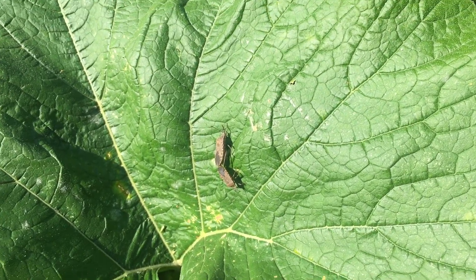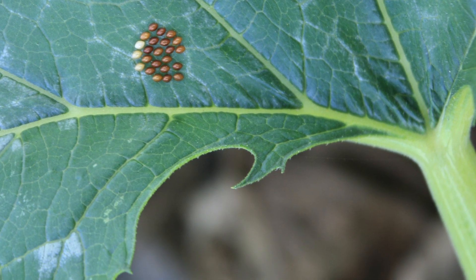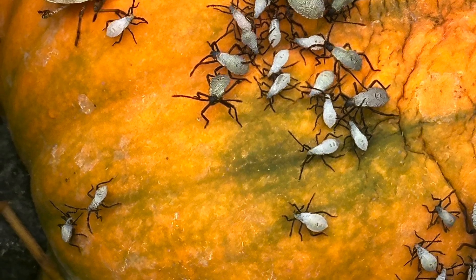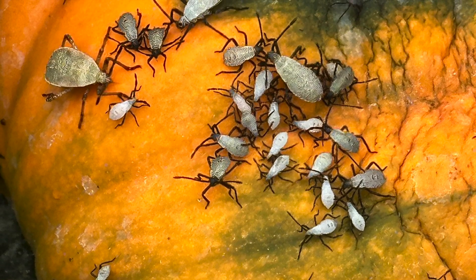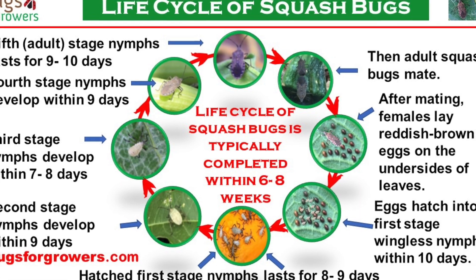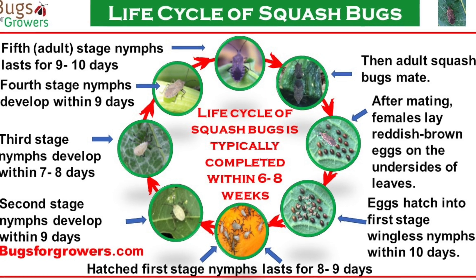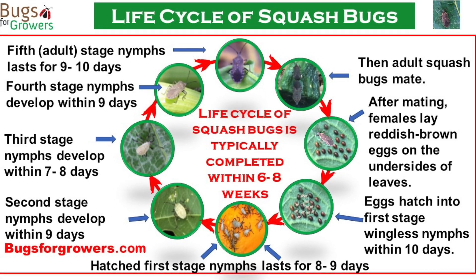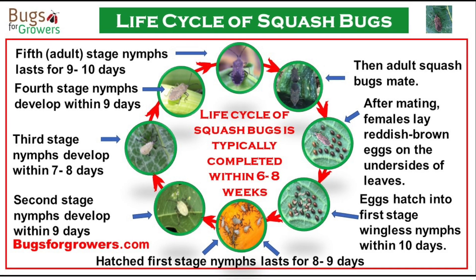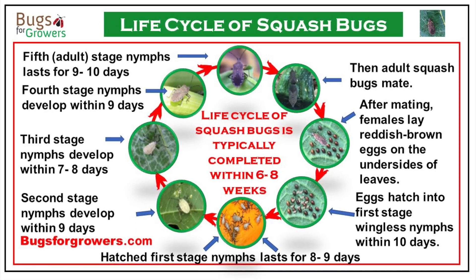After mating, females lay eggs in clusters on the upper or lower side of leaves. The eggs hatch into nymphs which develop through five stages before becoming adults. Squash bugs typically produce one generation in colder regions and two to three generations in warmer regions.